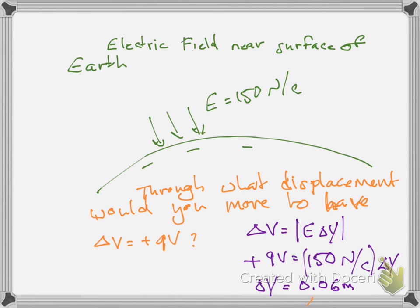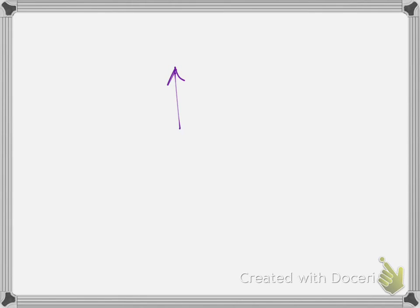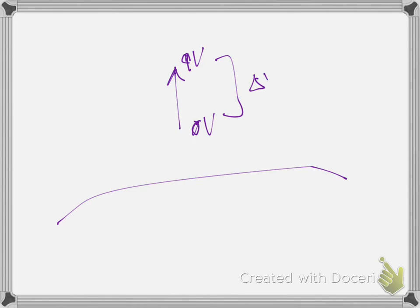So you get a 9-volt potential difference when you move 6 centimeters along or anti-parallel to the electric field. Which direction gives a positive 9 volts? The direction is up, because potential goes down along field lines. As you go up from the Earth's surface, your potential gets larger. Delta V is 9 volts, and you can define your zero wherever you want in a constant field.